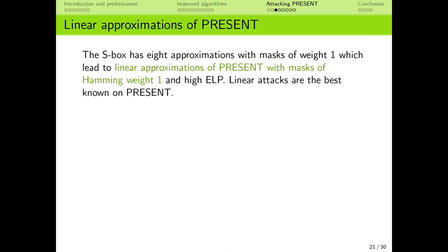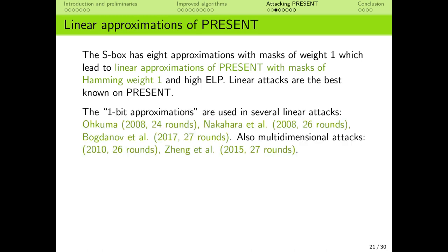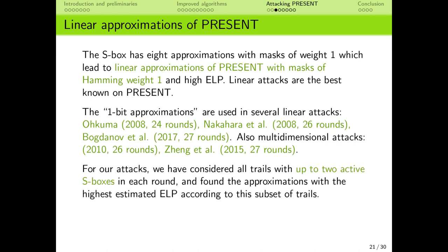The PRESENT S-box has 8 linear approximations with masks of Hamming weight 1. Because the linear layer is a bit permutation, this means there are linear approximations whose linear hulls contain many linear trails comprised of these 1-bit S-box approximations. There have been many linear attacks which make use of these strong linear hulls, which so far have been effective on up to 27 rounds and are the best known attacks of any kind on PRESENT. For our attacks, we have looked at all linear trails with up to 2 active S-boxes in each round, and have selected some approximations which have a strong ELP with this subset of trails.